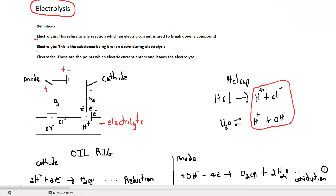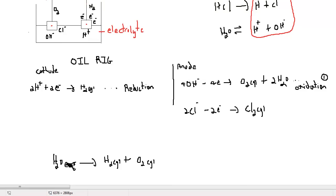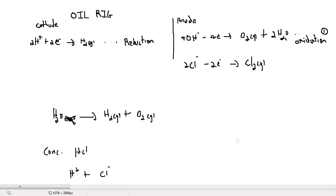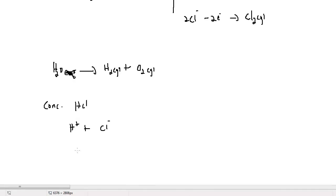If we want to break down the hydrogen chloride molecule, we would have to use concentrated hydrogen chloride. In that case, there would be a very limited amount of hydroxide ions, so the chloride ions would be the ones that are oxidized. The products from the electrolysis of concentrated HCl would therefore be hydrogen gas and chlorine gas.